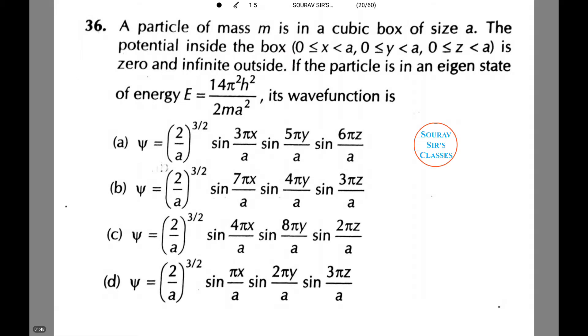A particle of mass m is in a cubic box of size a. The potential inside the box ranges from x being 0 to a, y ranging from 0 to a, and z also ranging from 0 to a. It is 0 and infinite outside. If the particle is in an eigenstate of energy E equals 14π²ℏ²/2ma², its wavefunction is among the following. Let's see how to do this.